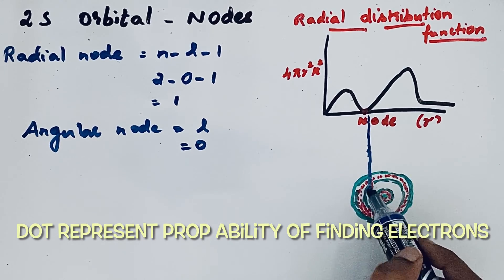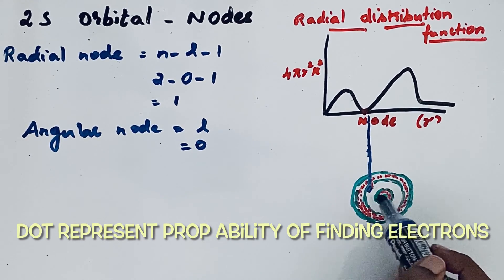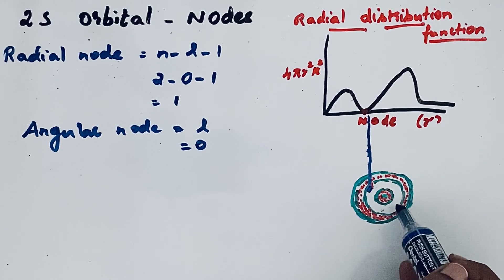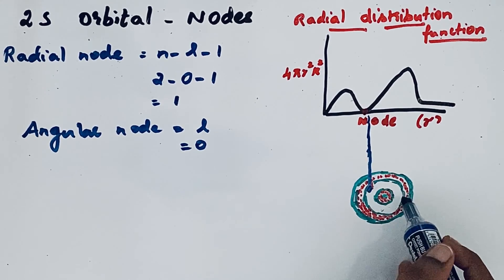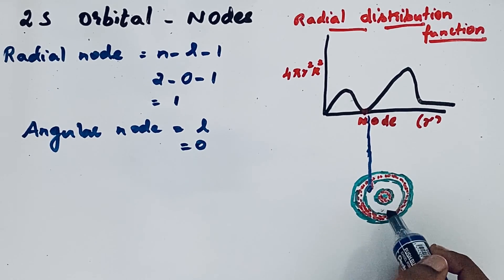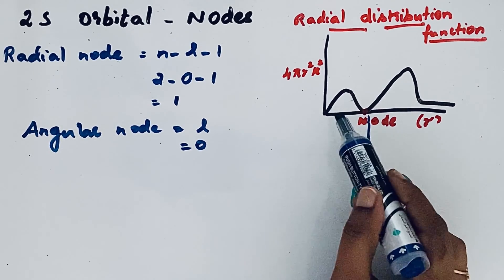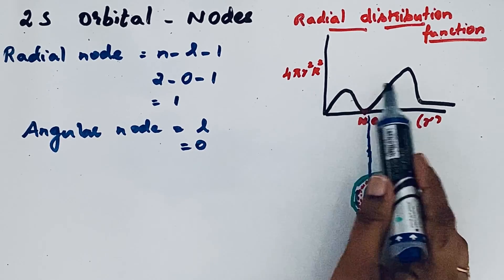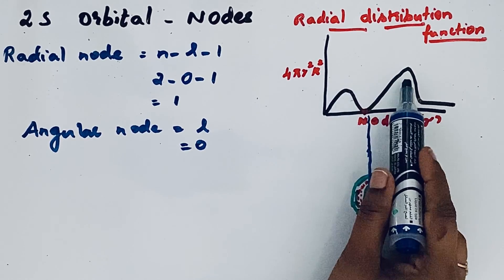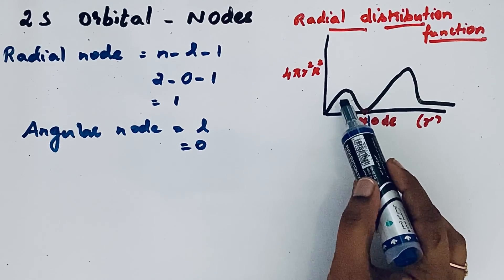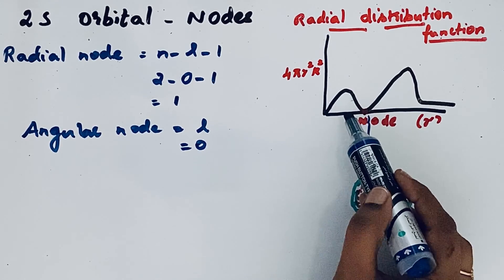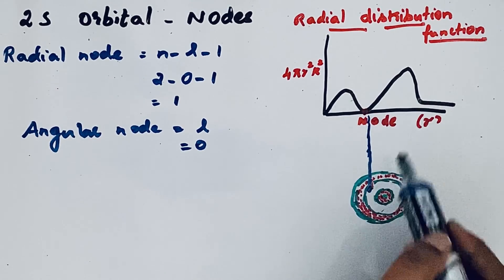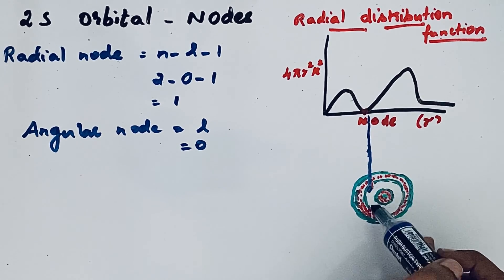So there is a node here. Then after that, again we have the dot. So this dot represents the electron probability in that particular region. Here also you can see that there are two maxima: one near the nucleus and another one is a little far from the nucleus. So this shows that electrons in 2s orbital spend a little time near the nucleus but most of the time a little far from the nucleus.